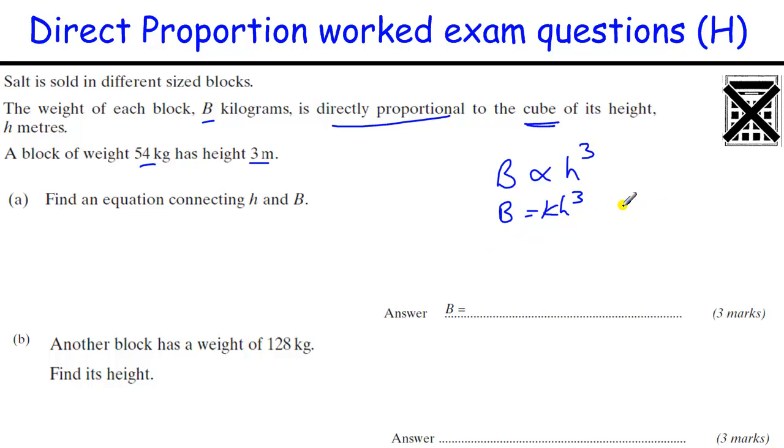We are told that the block of weight 54 has a height of 3 meters. So 54 equals K times 3 cubed. 3 cubed is 3 times 3 times 3, which is 27. And 54 is double 27, so K equals 2. So we've got the equation B equals 2H cubed.